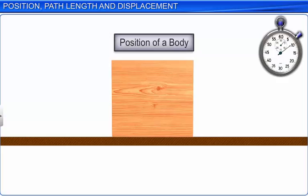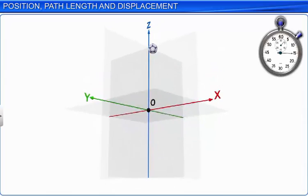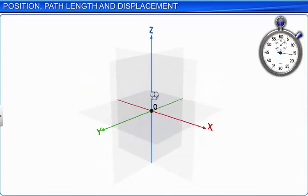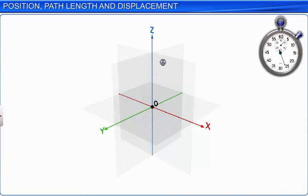Let us first understand what is meant by the position of a body. The position of a body in space is denoted by three coordinates: X, Y, and Z. The path length and displacement of a body depend on how its position changes with time.